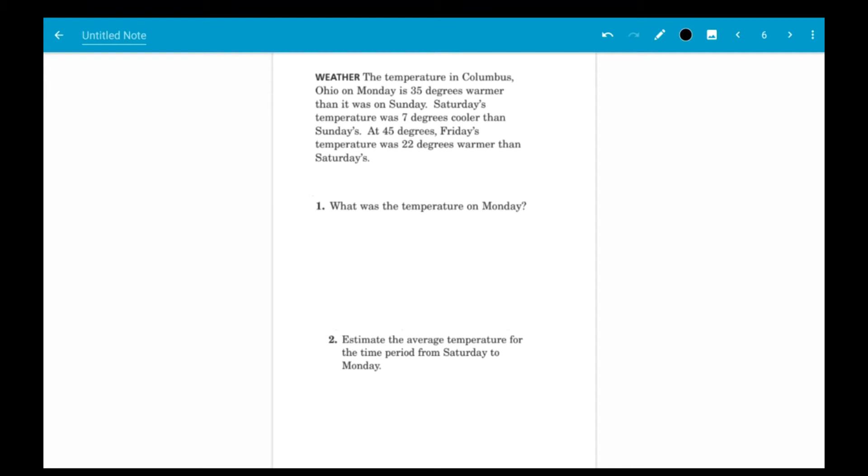So let's get to the word problem. Okay, the temperature in Columbus, Ohio on Monday is 35 degrees warmer than it is on Sunday. Saturday's temperature was seven degrees cooler than Sunday's at 45 degrees. Friday's temperature was 22 degrees warmer than Saturday's.